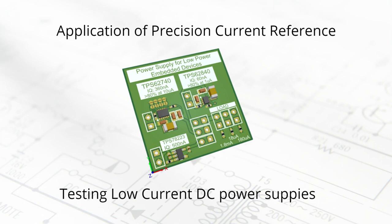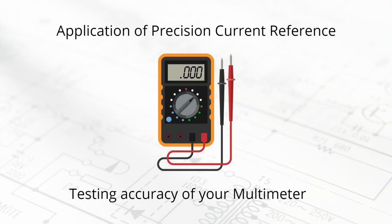The current reference can also be used as a constant current DC load for up to 25 milliampere. When testing power supplies for battery-powered embedded devices, you need to make sure they have the highest possible efficiency under low load conditions — for example, testing efficiency at 100 microampere, 1 milliampere, or 10 milliampere load depending on your application. Another important use case is checking the DC current measurement accuracy of your multimeter.